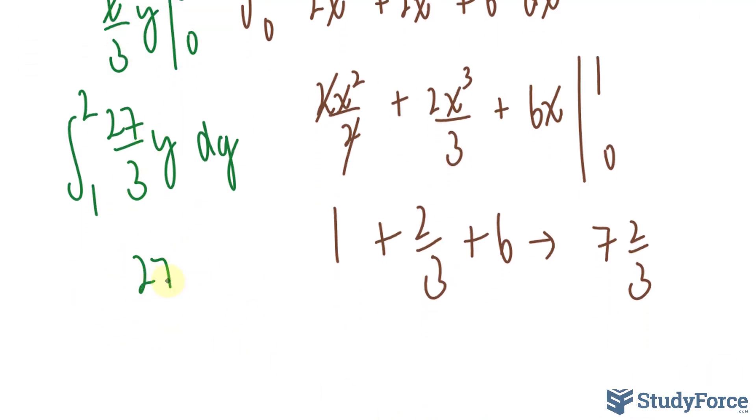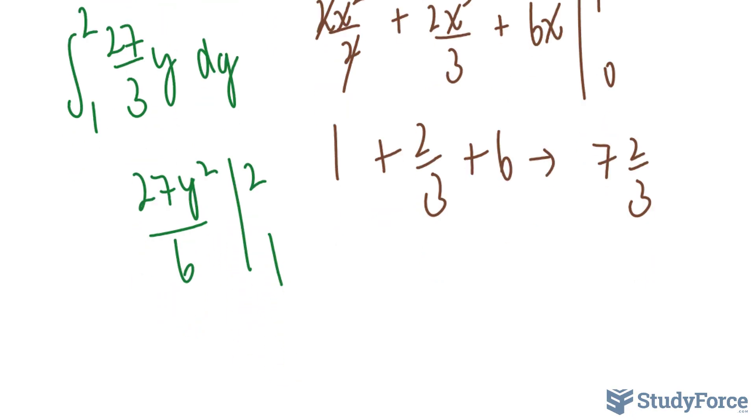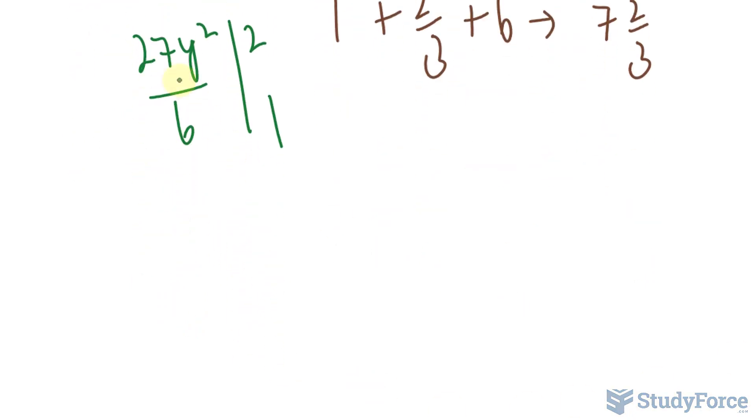We have 27y squared and divided by 2. So 3 times 2 is 6. Evaluate it at 2 and 1. The upper limit is 2. So we have 27 times 2 raised to the power of 2 over 6 minus 27 times 1 over 6.